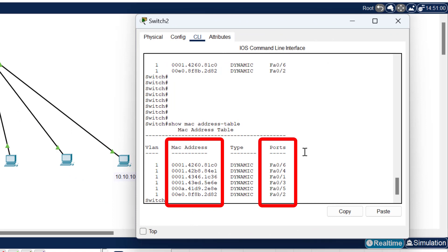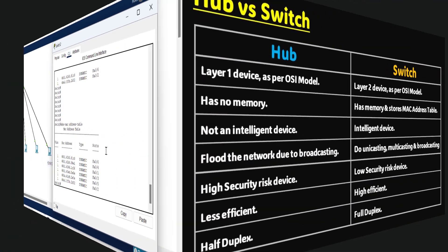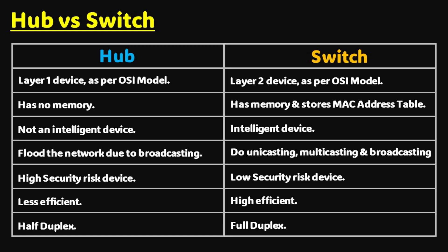We have seen how to create a local area network using a switch in Cisco Packet Tracer. Now, to clear our concept, let's discuss the difference between a hub and a switch. A hub is a layer 1 device, working at the physical layer of the OSI model, whereas a switch is a layer 2 device working at the data link layer. A hub has no memory, so it cannot store end devices' MAC addresses, whereas a switch has memory and stores MAC addresses in its MAC address table. That's why a hub is not an intelligent device, while a switch is an intelligent device that forwards data based on its MAC address table.